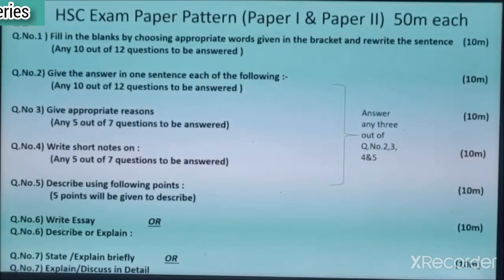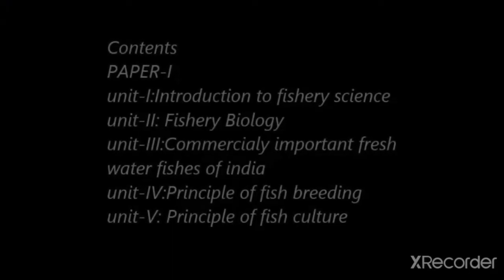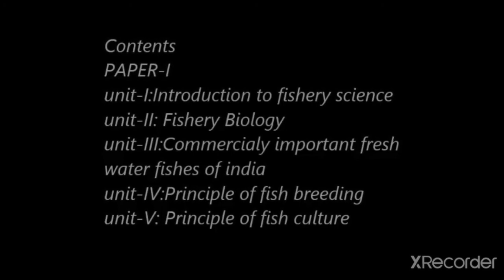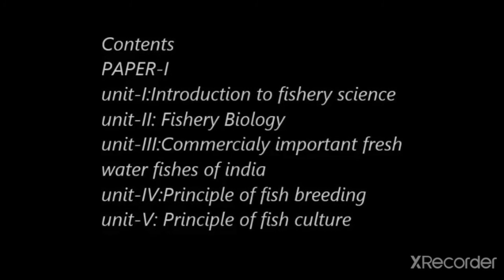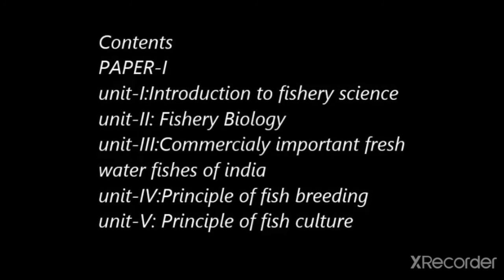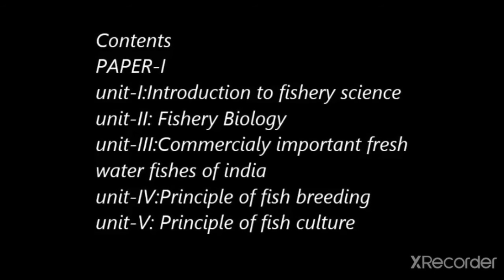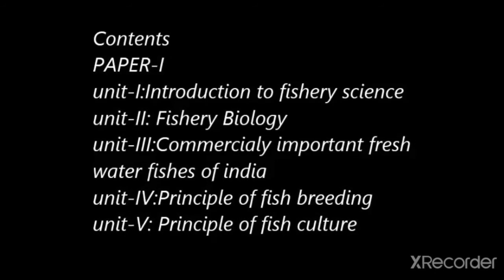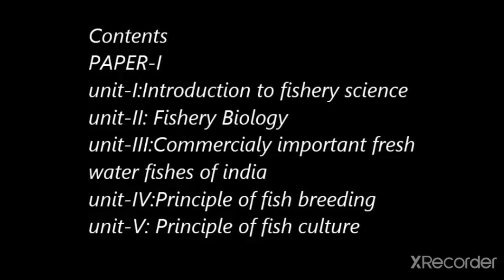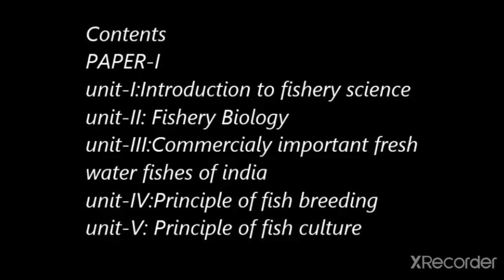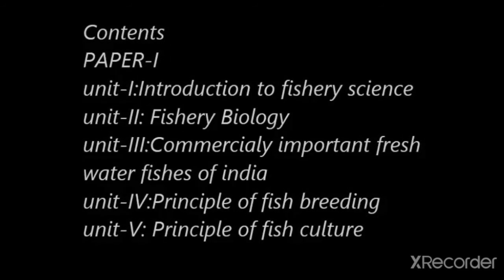Students, these are 5 units of paper first and 5 units of paper second which you have to study. The content of paper first is: introduction to fishery science, unit 2 fishery biology, unit 3 commercially important freshwater fishes of India, unit 4 principle of fish breeding, and unit 5 principle of fish culture. These are the paper first 5 units.